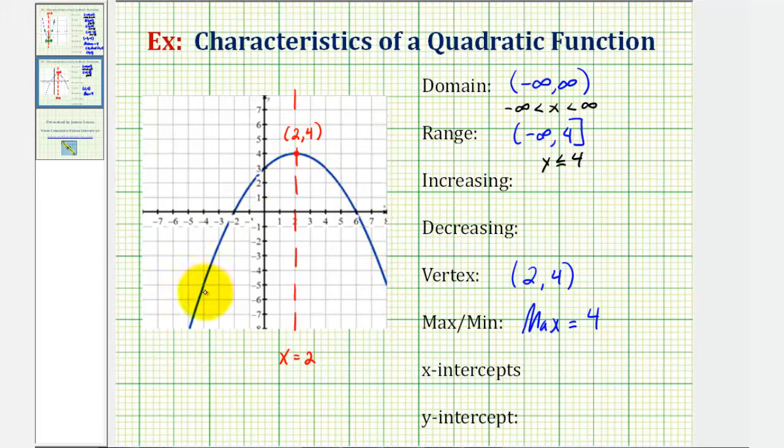And notice how the graph changes from increasing to decreasing at the vertex. So the function would be increasing on this interval and decreasing on this interval. And at x equals two, it's neither increasing or decreasing. So we won't include two on either interval.